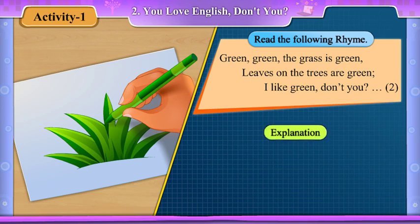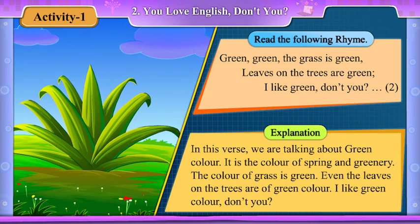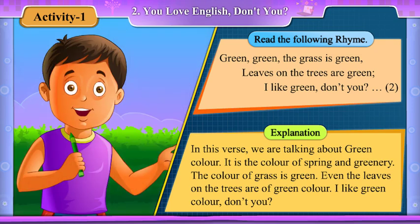Explanation. In this verse, we are talking about green colour. It is the colour of spring and greenery. The colour of grass is green. Even the leaves on the trees are of green colour. I like green colour, don't you?